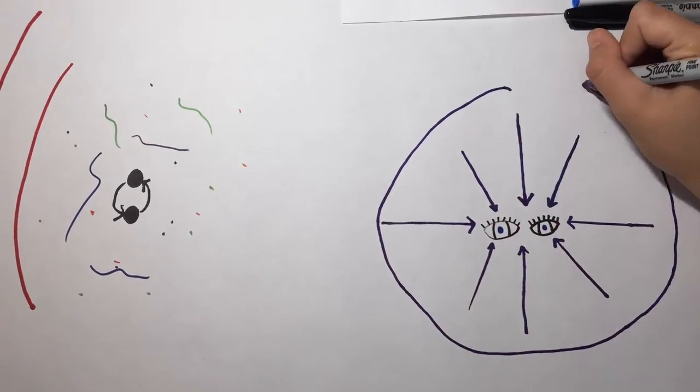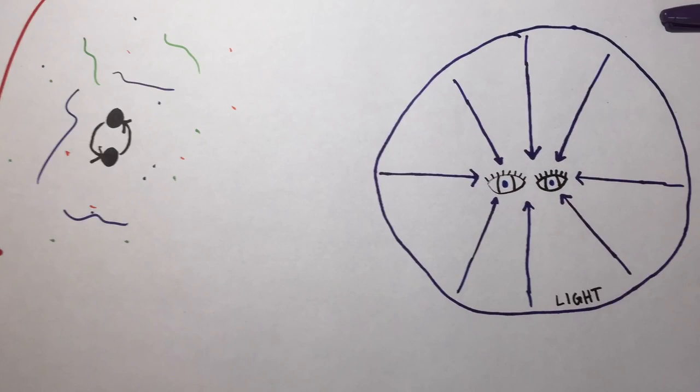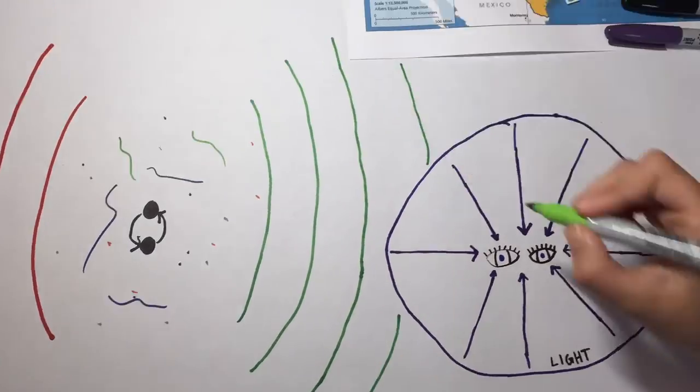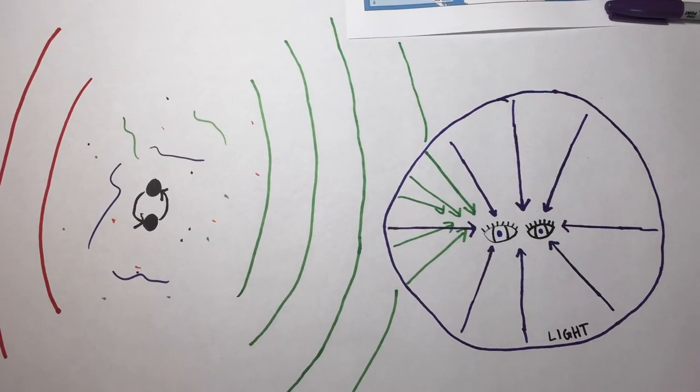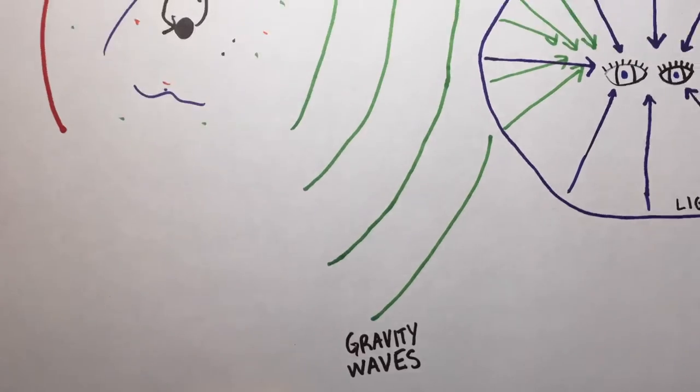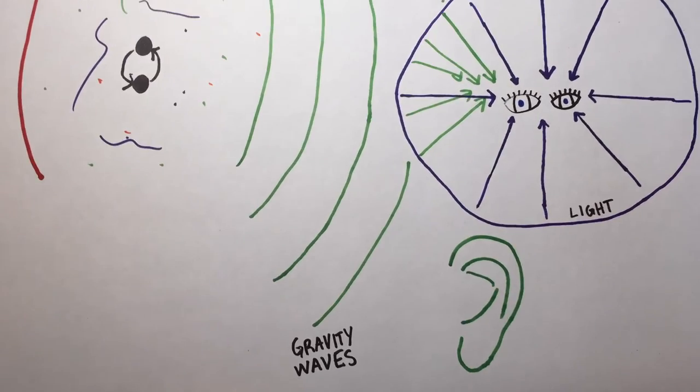We have always relied on light to see things, but light can only travel so far. Gravitational waves are not blocked or slowed down by anything, so we now have a new way to detect cosmological events beyond our field of vision. The detection of these waves can be compared to a deaf person gaining his or her hearing.